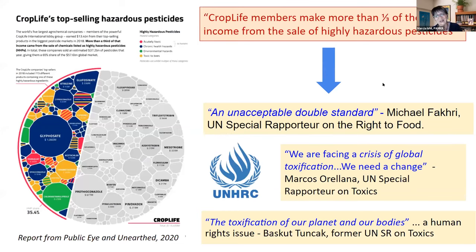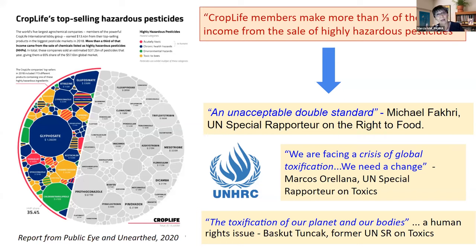UN experts have called these pesticides a global human rights concern because of their catastrophic impact on the environment, human health, and society as a whole. These UN experts have identified the sale, export, and relentless pressure to use chemical pesticides as responsible for the violation of numerous human rights — including the right to health and to a healthy environment, to safe working conditions, to adequate food and clean water, to a dignified life, and the rights of indigenous peoples, women, and children not to be exposed to hazardous pesticides. To defend these human rights, we need a transformation of the agri-food system and of the political and economic structures locking us into the corporate industrial model.